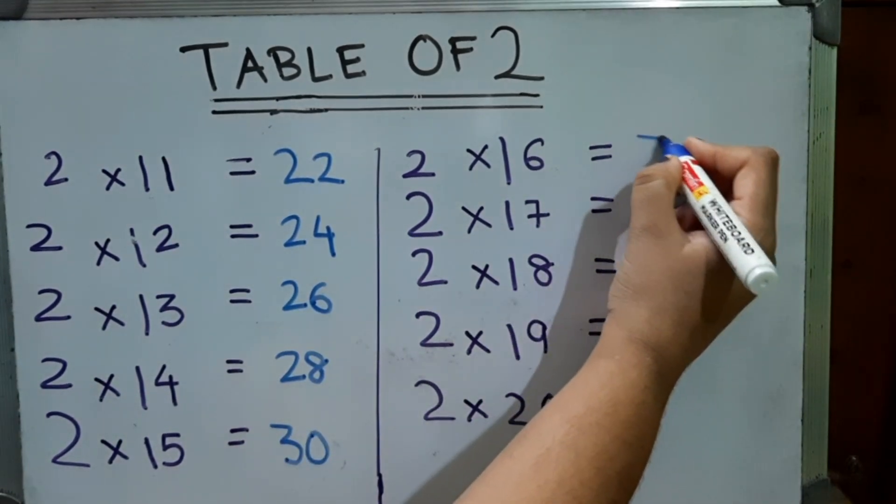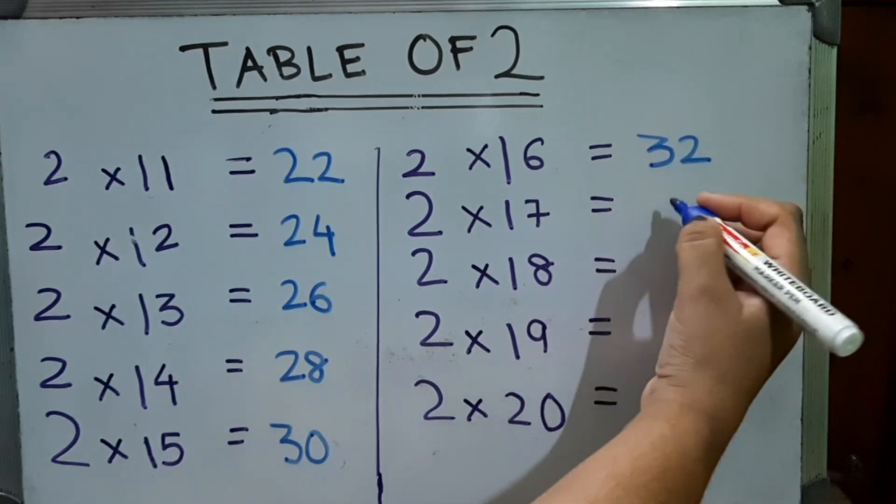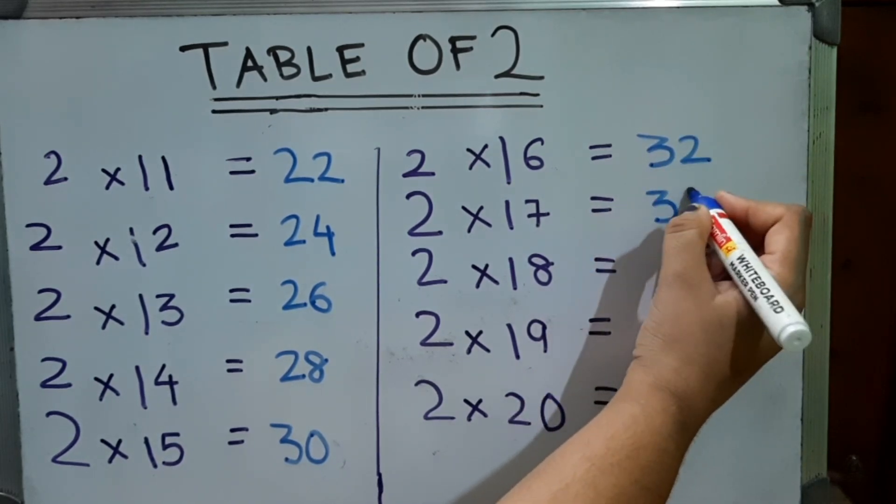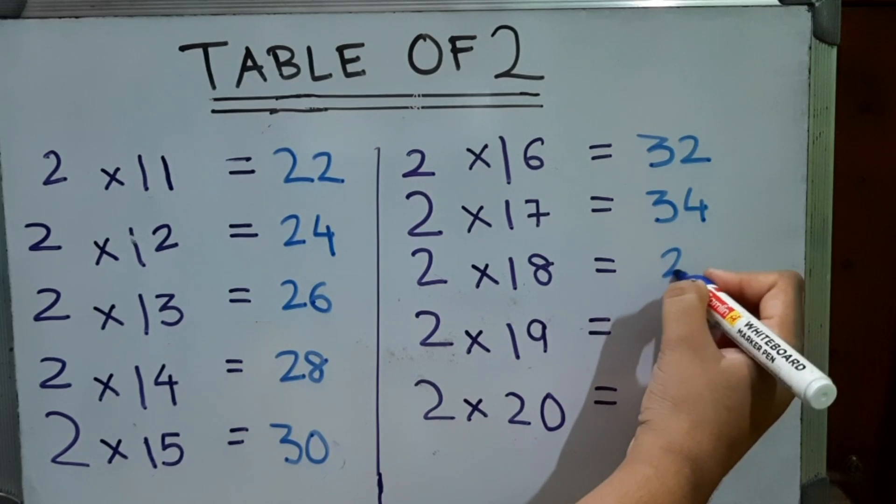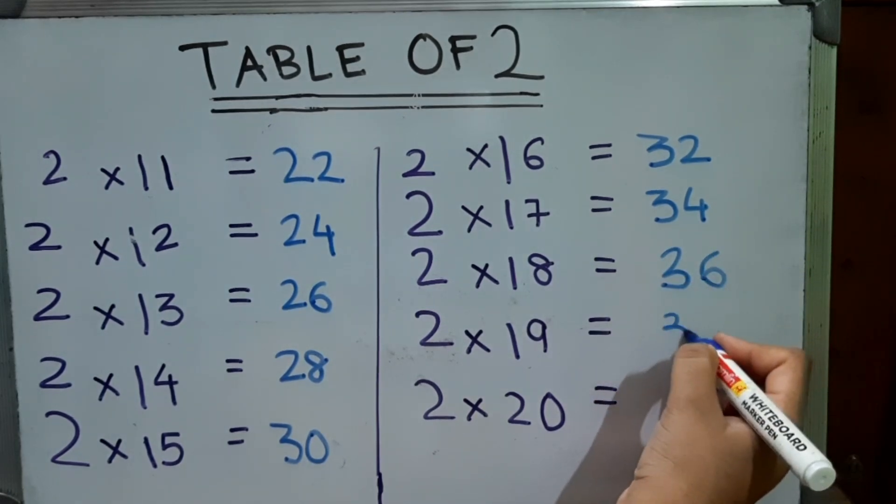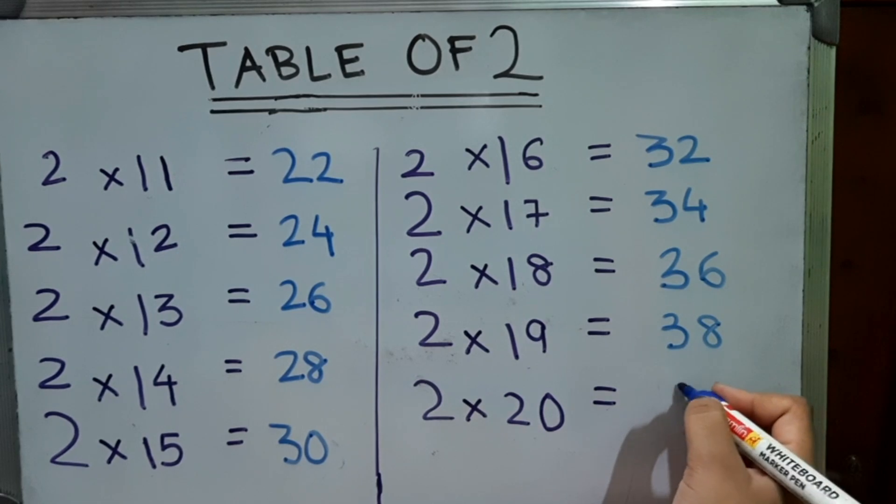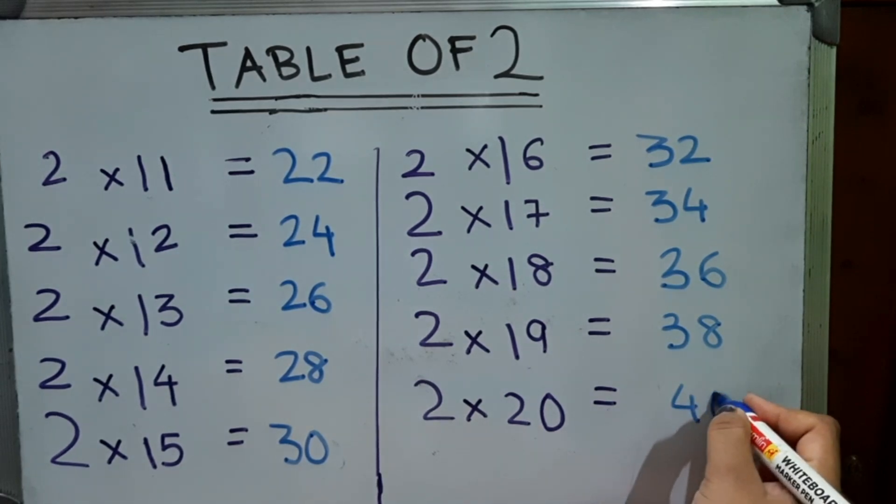2 into 16, 32. 2 into 17, 34. 2 into 18, 36. 2 into 19, 38. 2 into 20, 40.